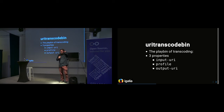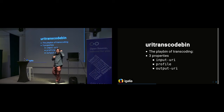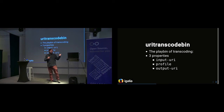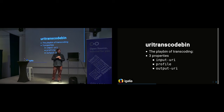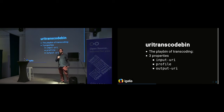We also have the URI Transcode Bin element, which takes three simple properties: the input URI, the profile (which is the GstEncodingProfile), and the output URI. So you can have a very simple pipeline that will do the whole transcoding job by setting just three properties. The idea behind this API is to have something very similar to play bin, but for transcoding.